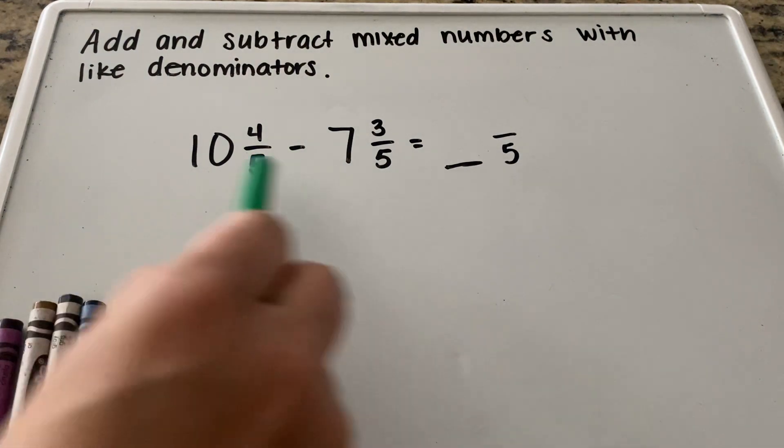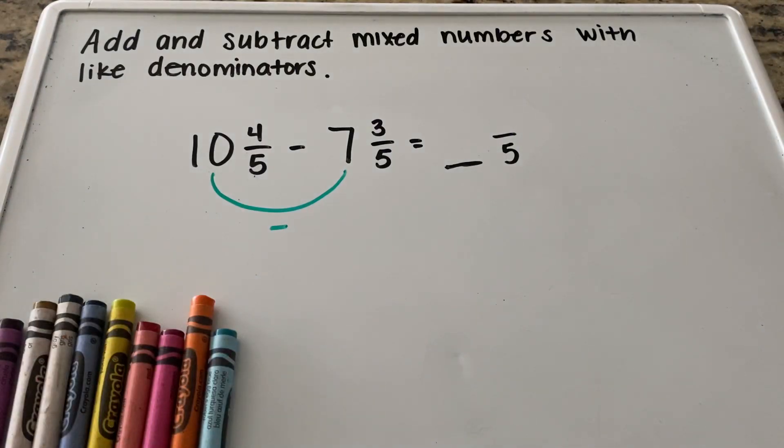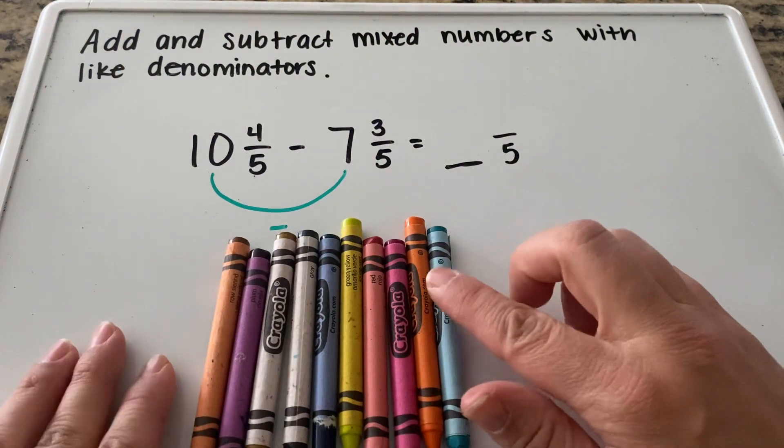We'll take our two whole numbers. We have ten minus seven is what we're working with first. And I already have my ten crayons. So if I have ten crayons and I'm going to take away seven.